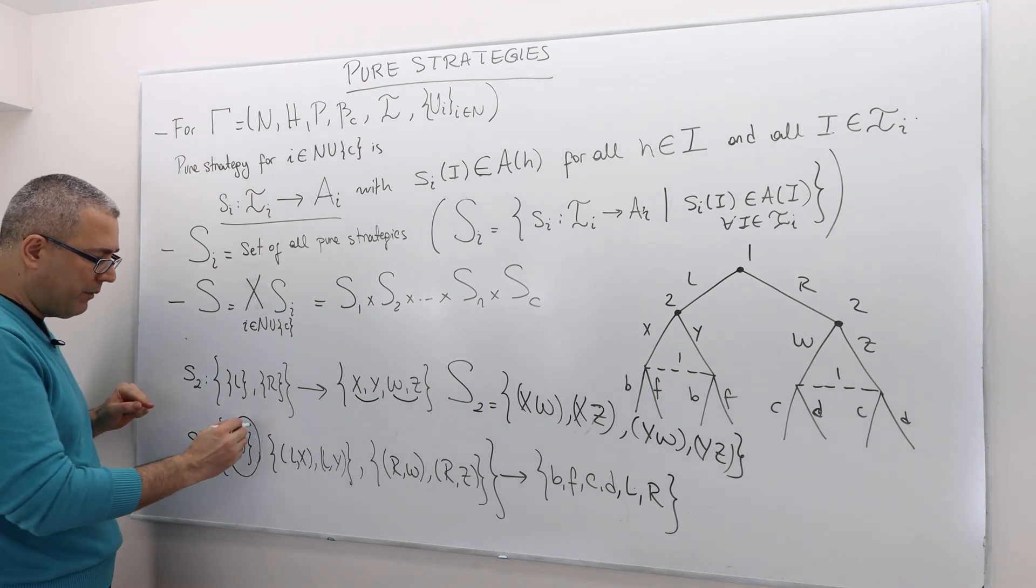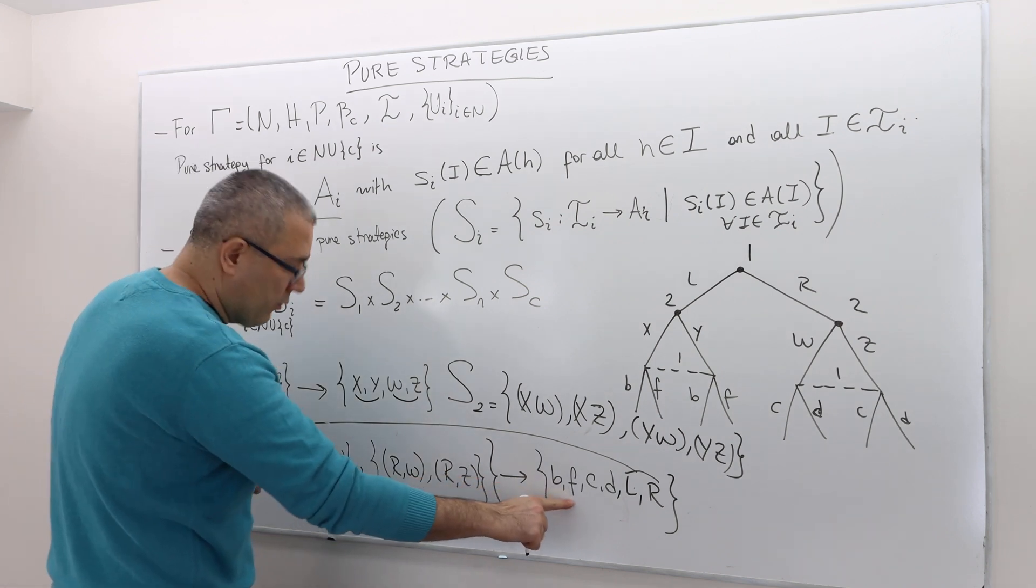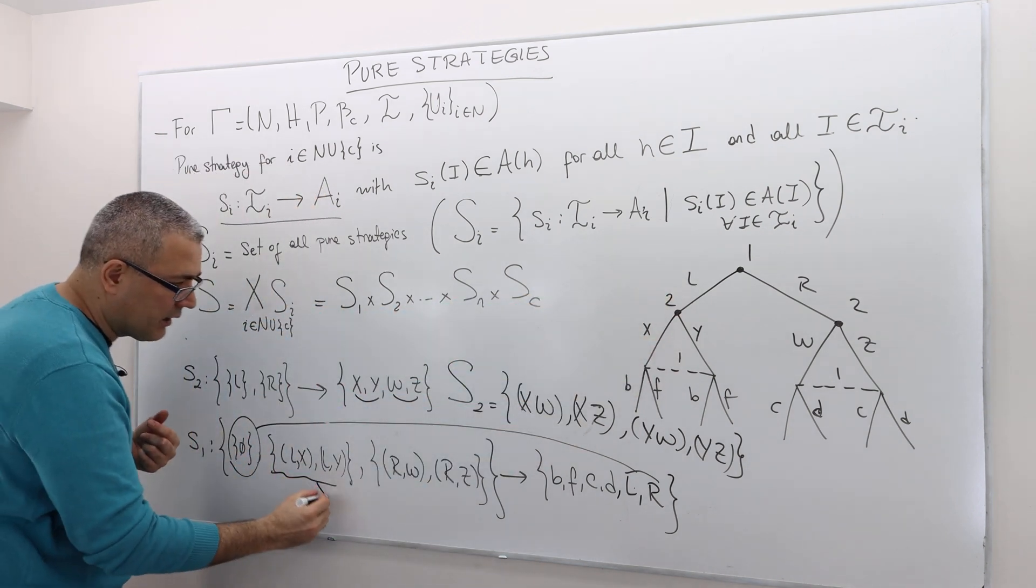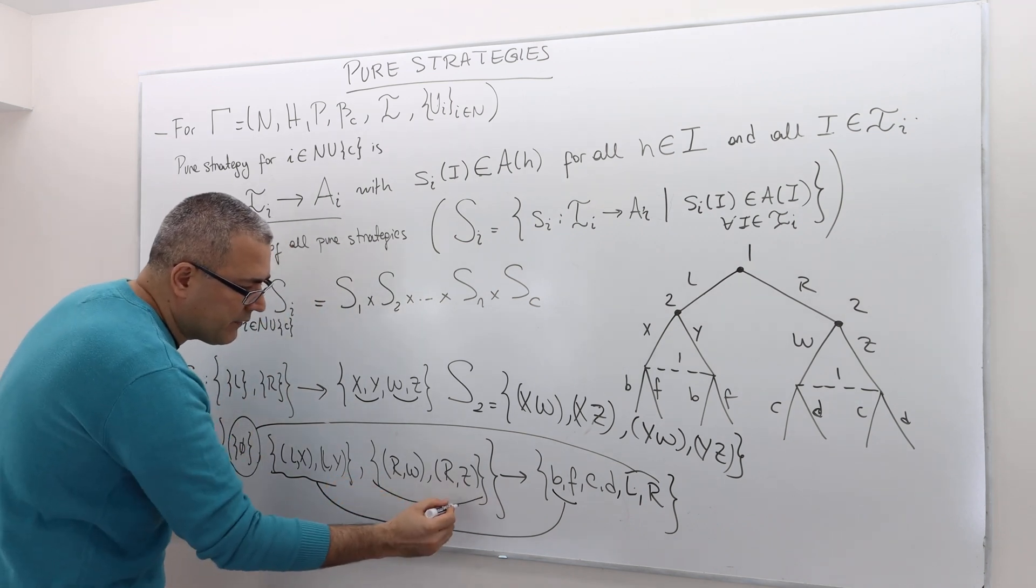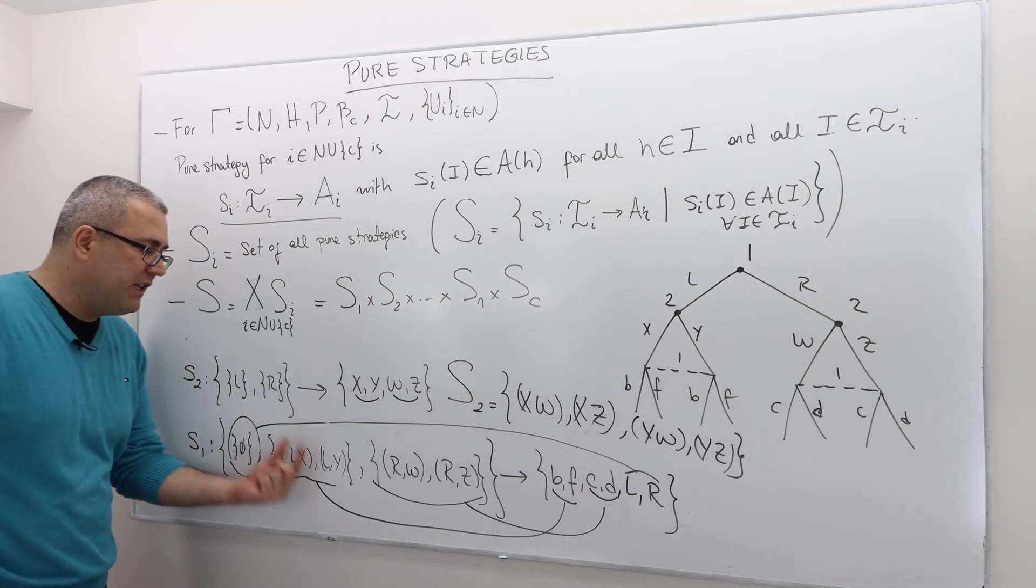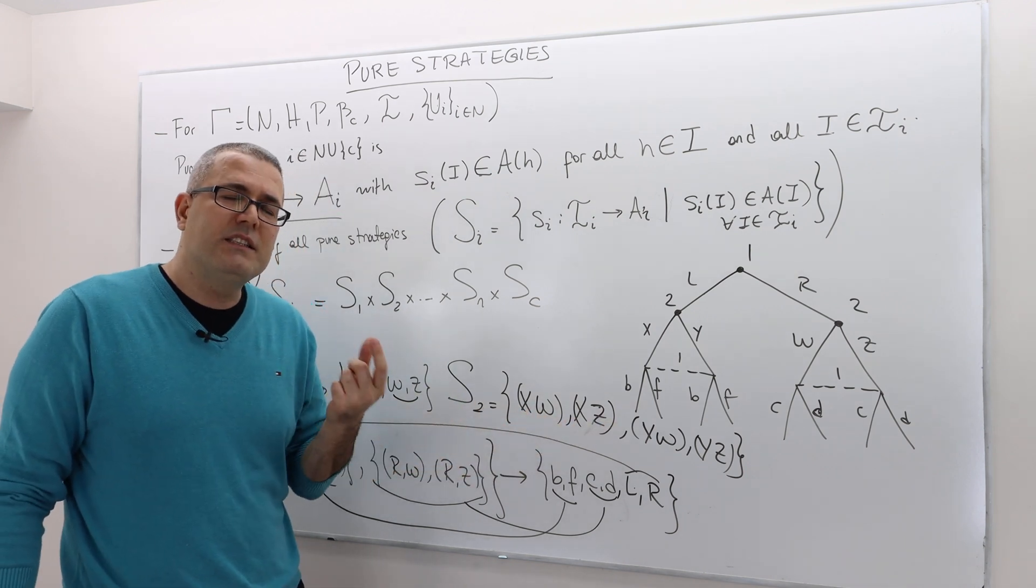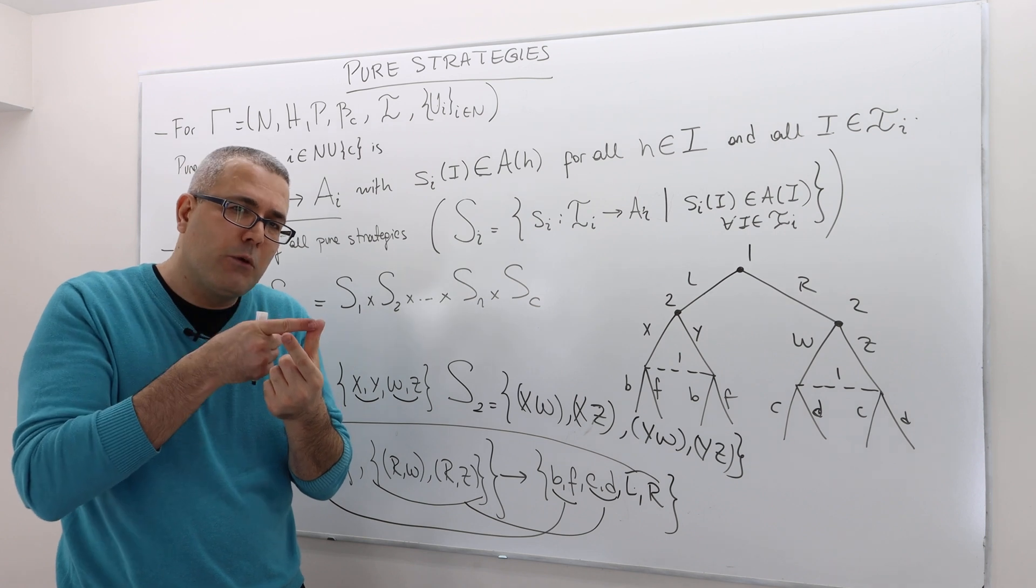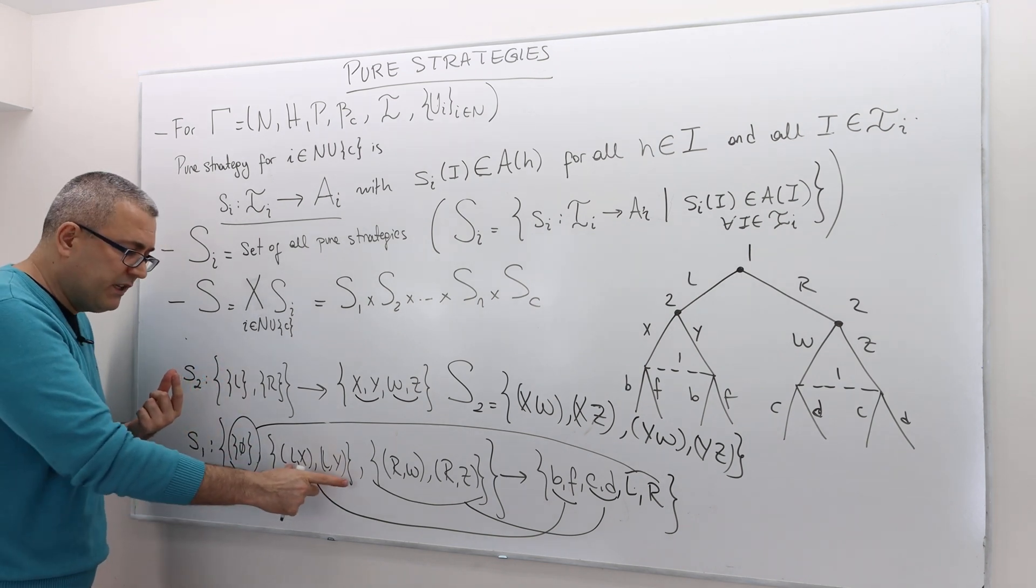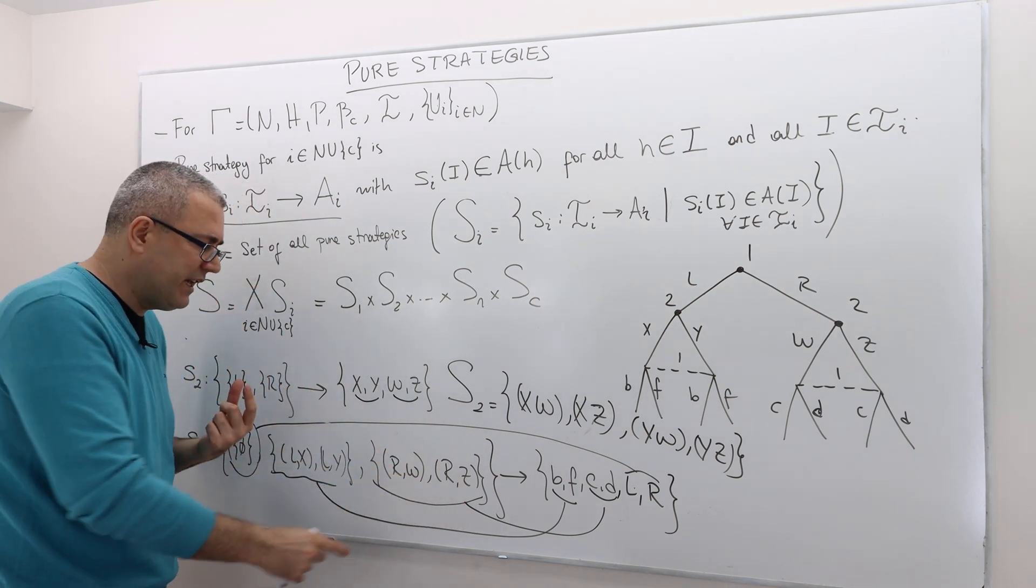So therefore, if you want to map the empty set, you have to map it to either left or right. When you map this info set, you can map it either B or F, right? Because after LX history or LY history, the only available actions are B and F. And then finally, when you map this, you can map it to C or D. So don't forget, a strategy for player one is going to map these three things to one of those available actions. So his strategies, when I write it in this fashion, is not a tuple. It's going to be triple, right? The first component is basically the correspondence for the initial decision node or null history. The second component is this info set or these two histories. And then the final component is going to be the action he's going to take after these histories.